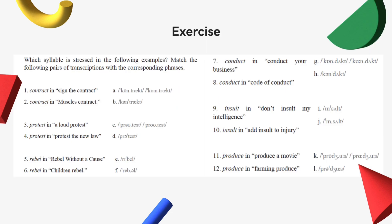Let's take a look at an exercise. There are six pairs of words used as verbs and as nouns. Like in the first two examples, we have the word C-O-N-T-R-A-C-T, used as a noun in number one — 'sign the contract' — and as a verb in number two — 'muscles contract'. Transcription A matches example number one, and transcription B matches the use of the word in example number two. Why don't you take a look at the other five pairs and see if you can match them.